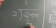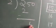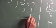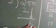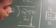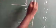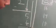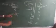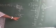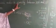So 250 divided by 2: 2 goes into 2 once, remainder 0; bring down 5, 2 goes into 5 twice with remainder 1; bring down 0, 2 goes into 10 five times, remainder 0. So the answer is 125. Therefore 125 is the exact number lying between 100 and 150.